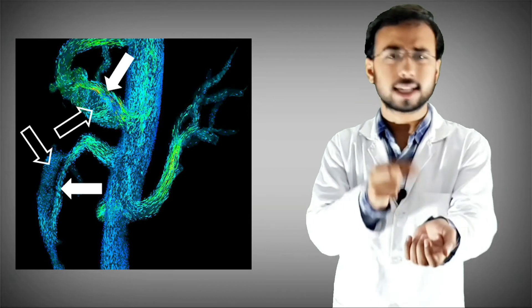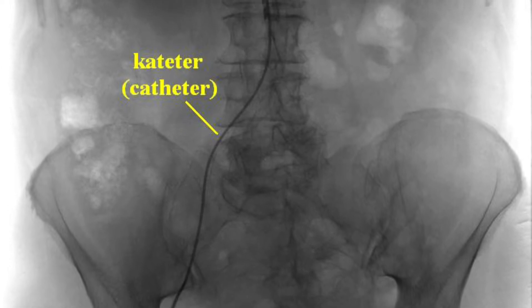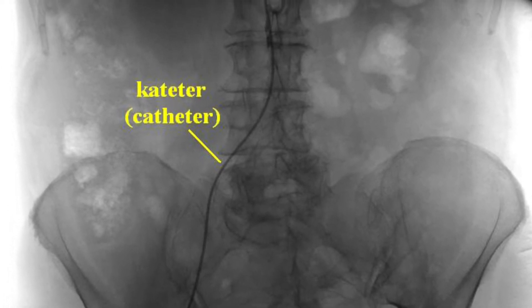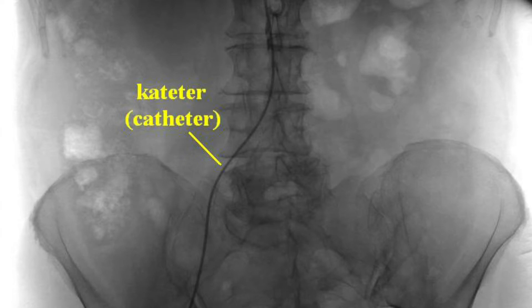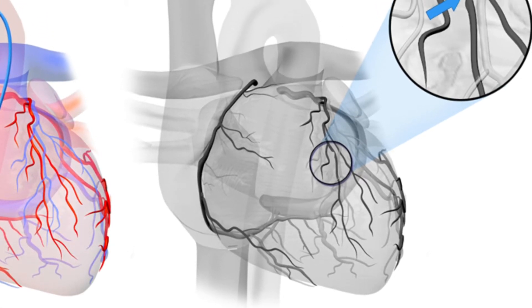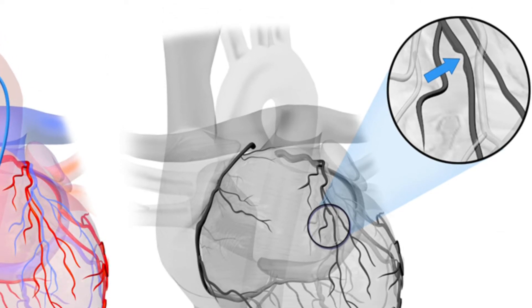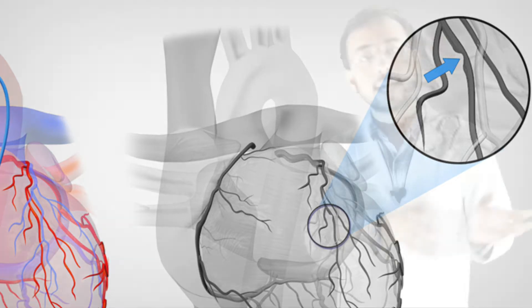The catheter is guided with the help of X-ray until it reaches the heart. Once it arrives, the second step begins: injection of contrast dye through the catheter. The contrast dye is a special tracking dye that is injected via the catheter and carried to the coronary arteries. Then, using the contrast dye and X-ray imaging, the doctor can visualize the inside of the coronary arteries to identify where blockage or narrowing is present.